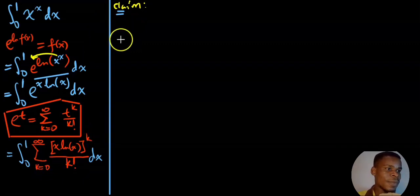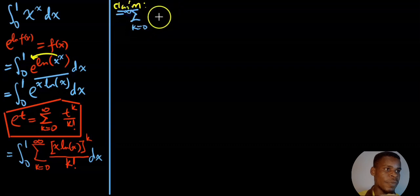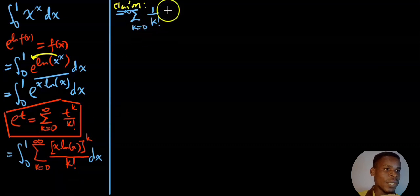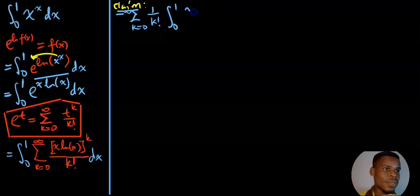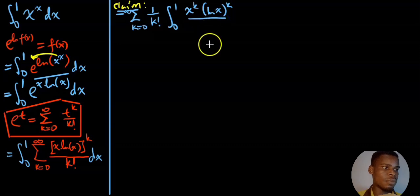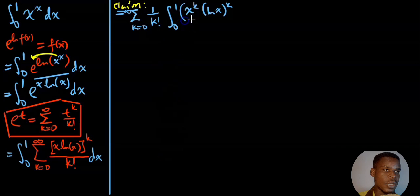So by assuming that claim is true, we switch the order. We put the sum outside: the sum as k starts from 0 up to infinity. Notice that the k factorial has nothing to do with x, so we can pull it out. The integral is then only over x: x raised to the power of k times the natural logarithm of x raised to the power of k, divided by k factorial, and then dx.